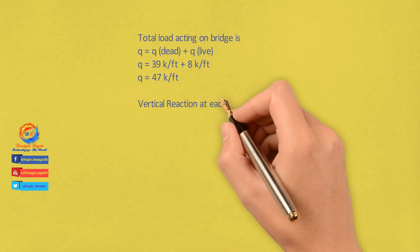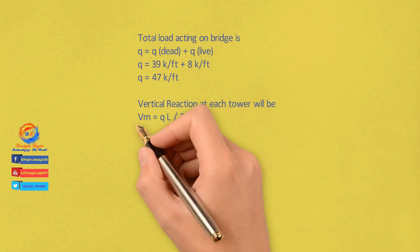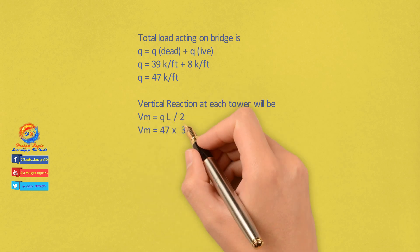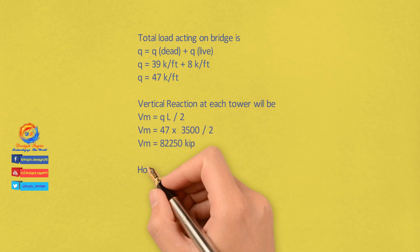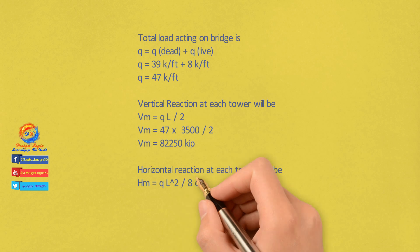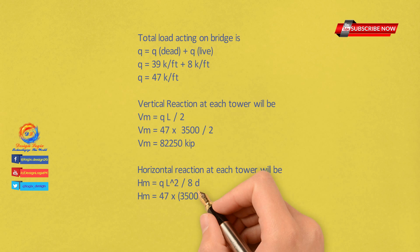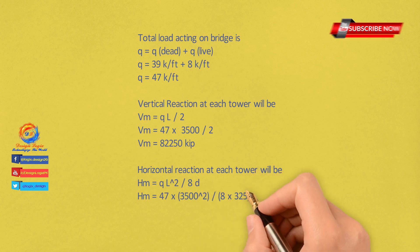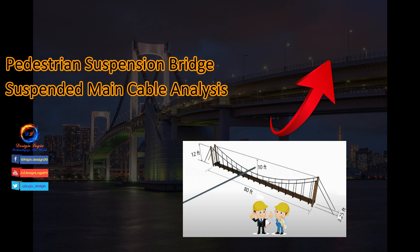Vertical reaction at each tower due to the main span: Vm = q·L / 2 = 47 × 3500 / 2 = 82,250 kip. Horizontal reaction at each tower due to the main span: Hm = q·L² / (8d) = 47 × 3500² / (8 × 325) = 221,442 kip.